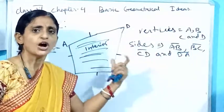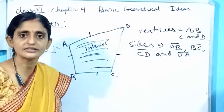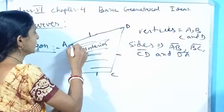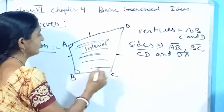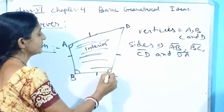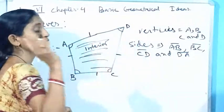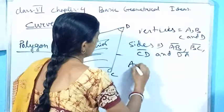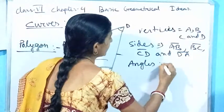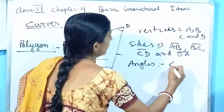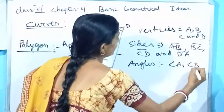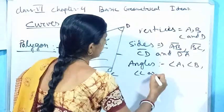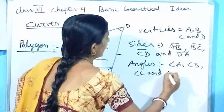How many angles are there? You can say angle A, angle B, angle C, angle D. So four angles I also have.